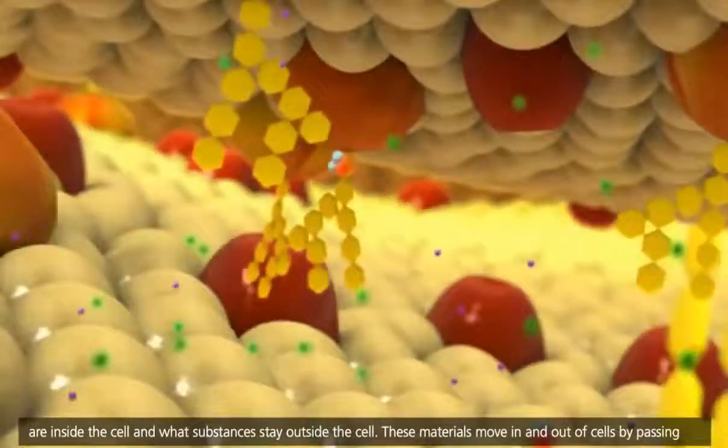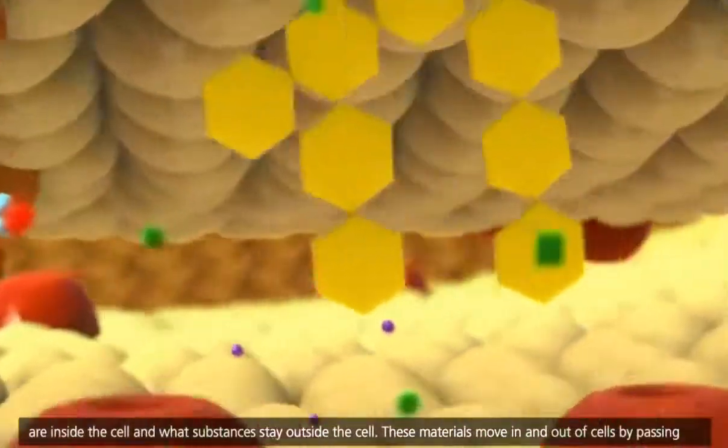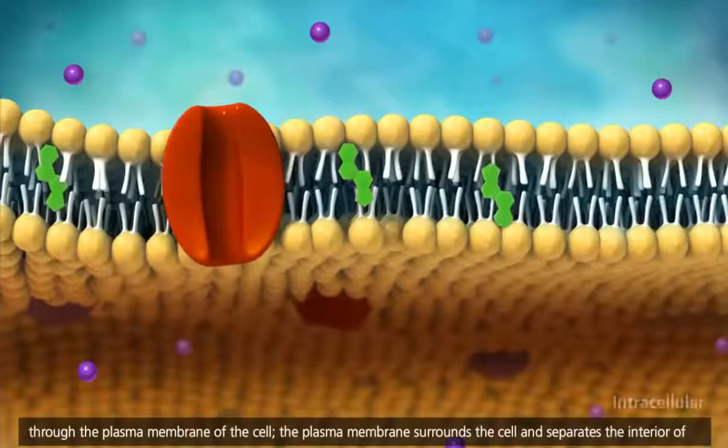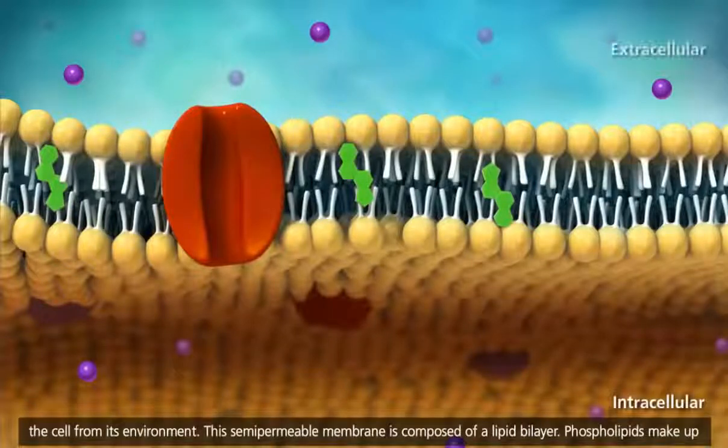These materials move in and out of cells by passing through the plasma membrane of the cell. The plasma membrane surrounds the cell and separates the interior of the cell from its environment.